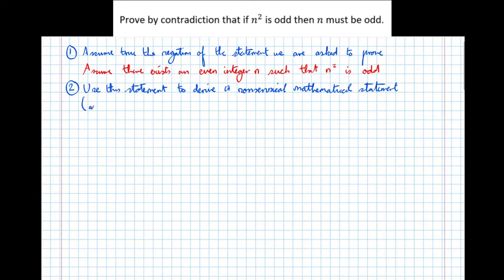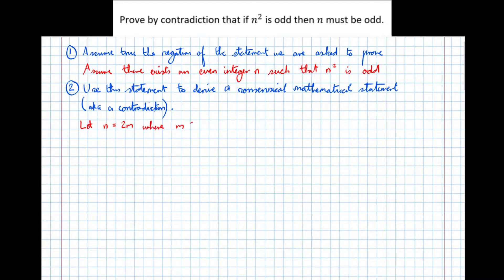We know that n is even, so let's write that in a different form. Any even number can be written as 2m, where m is an integer — m is in the set of integers Z. So if n equals 2m, we can proceed.